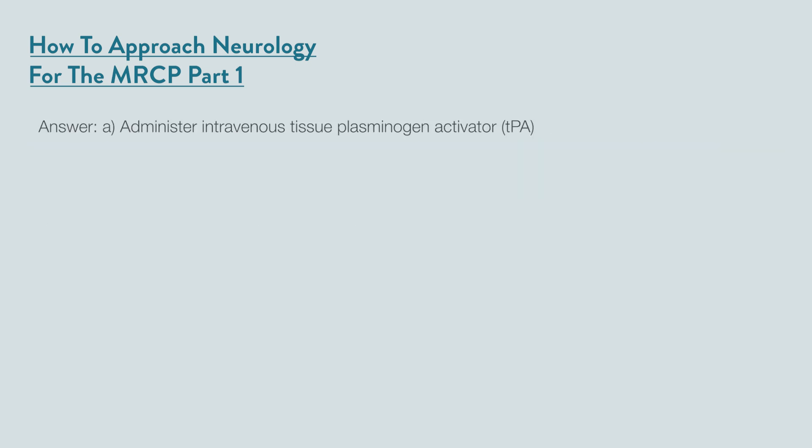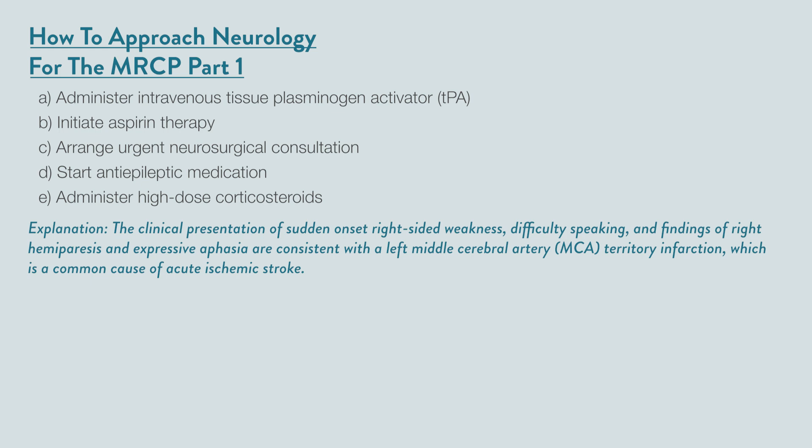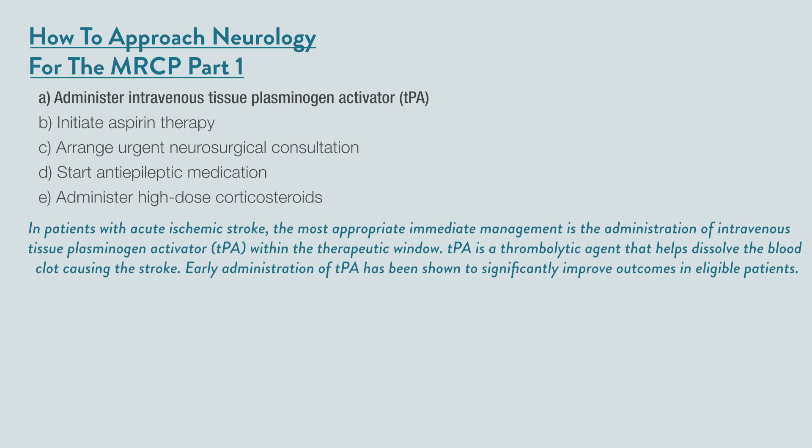The answer is A — administer intravenous tissue plasminogen activator. The clinical presentation is of a stroke with right-sided weakness, difficulty speaking, and the CT findings of the MCA infarct. In patients with an acute ischemic stroke, the most appropriate immediate management is the administration of intravenous tissue plasminogen activator, as long as they don't have any contraindications. It also has to be within a therapeutic window to dissolve the clot early enough.